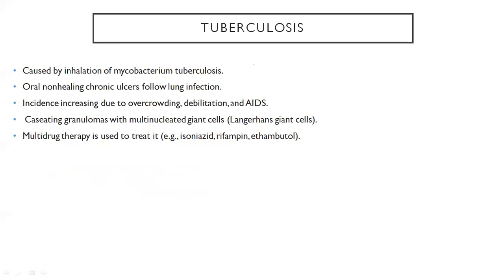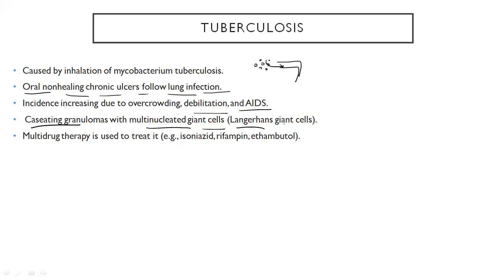Now coming to tuberculosis. Mycobacterium tuberculosis is present in the air and when inhaled by a person, they get infected. You can see oral non-healing chronic ulcers followed by lung infections. TB can be seen associated with debilitating diseases as well as patients with AIDS. In histology, you can see multinucleated Langerhans giant cells, which form a cheesy granuloma.